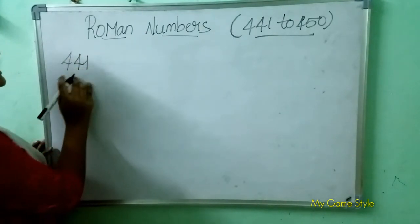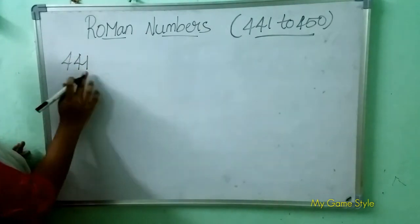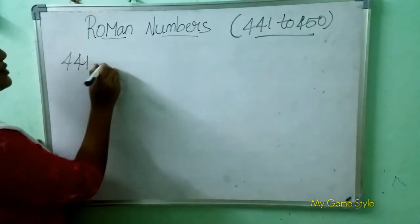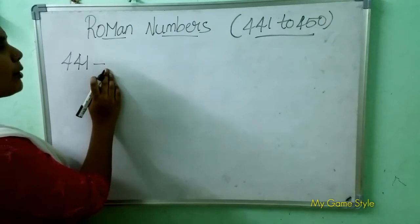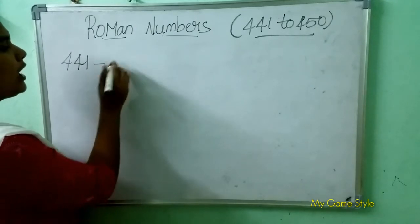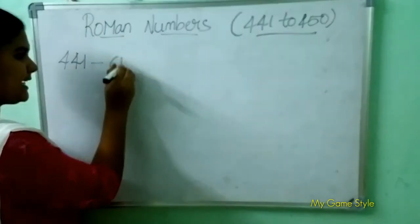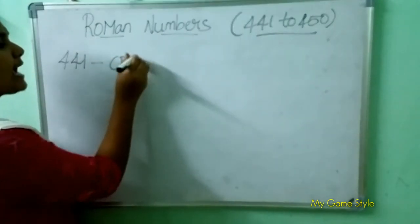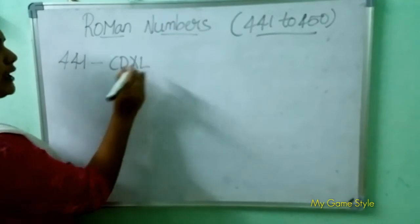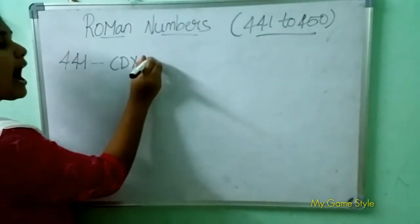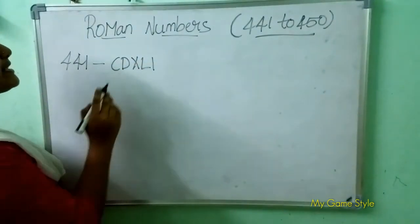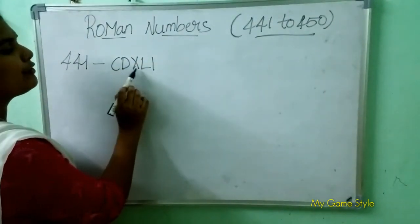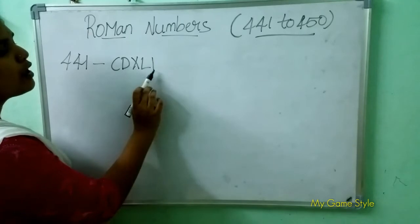441 means 441. So how to write 441 in Roman number? CD is 400, XL is 40, I is 1. So this means 441.